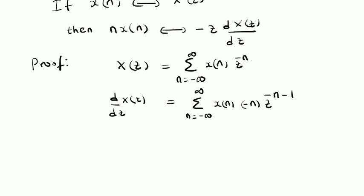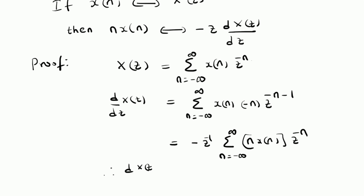This summation can be rewritten as minus Z inverse multiplied by the summation from n equals minus infinity to plus infinity of n times X of n multiplied by Z power minus n. Now, looking at this summation, it is clearly the Z transform of the sequence n times X of n.